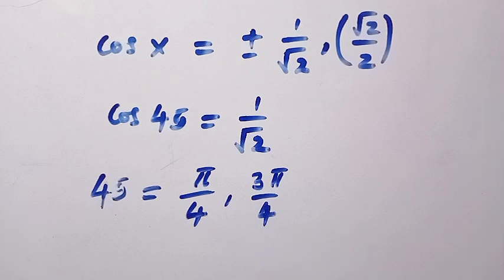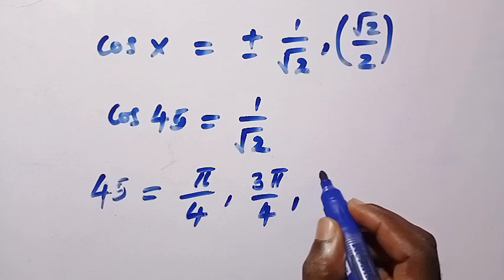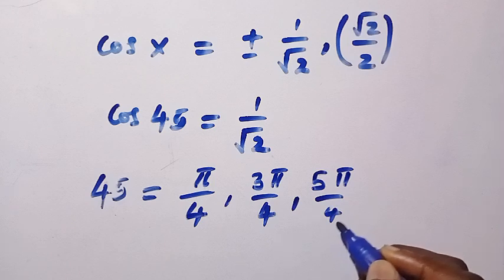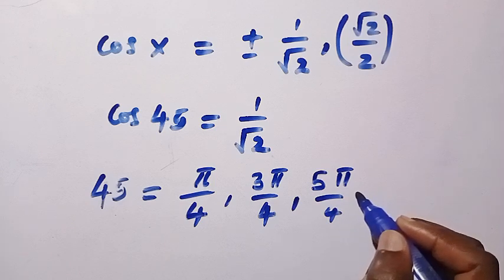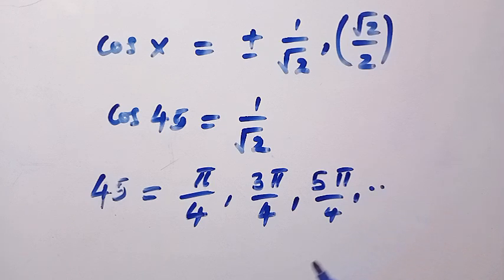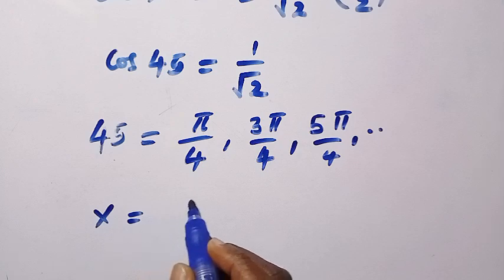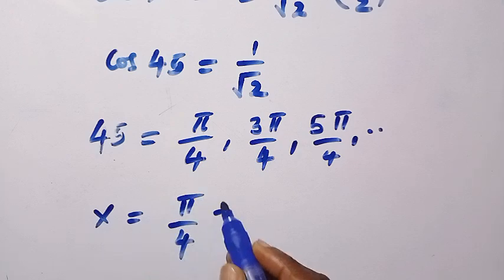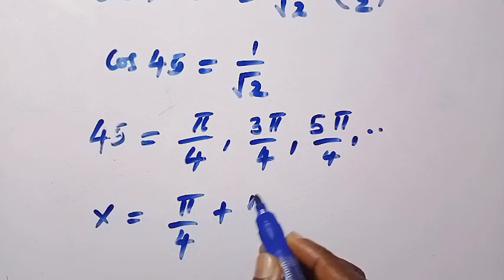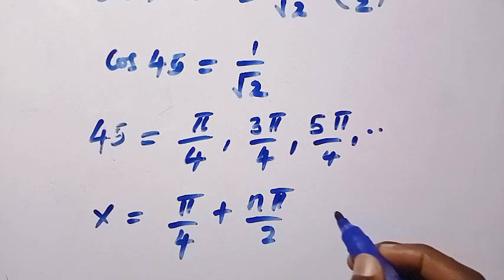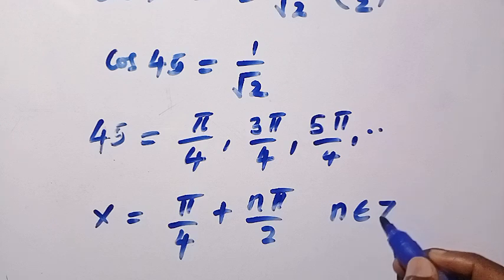And we still have, then followed by 5 pi divided by 4. So this is how it continues like that. So in the general form of this, we are going to have the value of x equals pi divided by 4 plus n pi divided by 2. So the n here is a member of an integer.